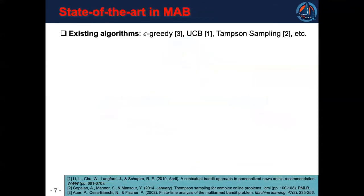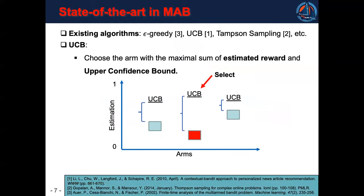To solve these dilemmas, there are many existing algorithms. For example, Epsilon-Greedy, Upper Confidence Bound, Thompson Sampling. Here we take UCB as an example. UCB chooses the arm with the maximum sum of the estimated reward and its upper confidence bound.